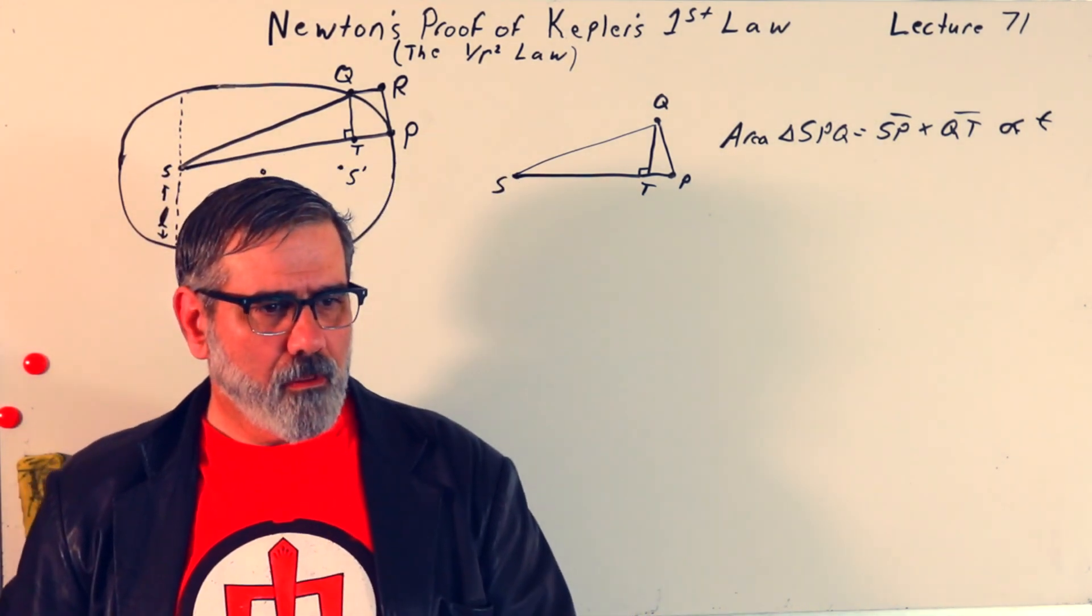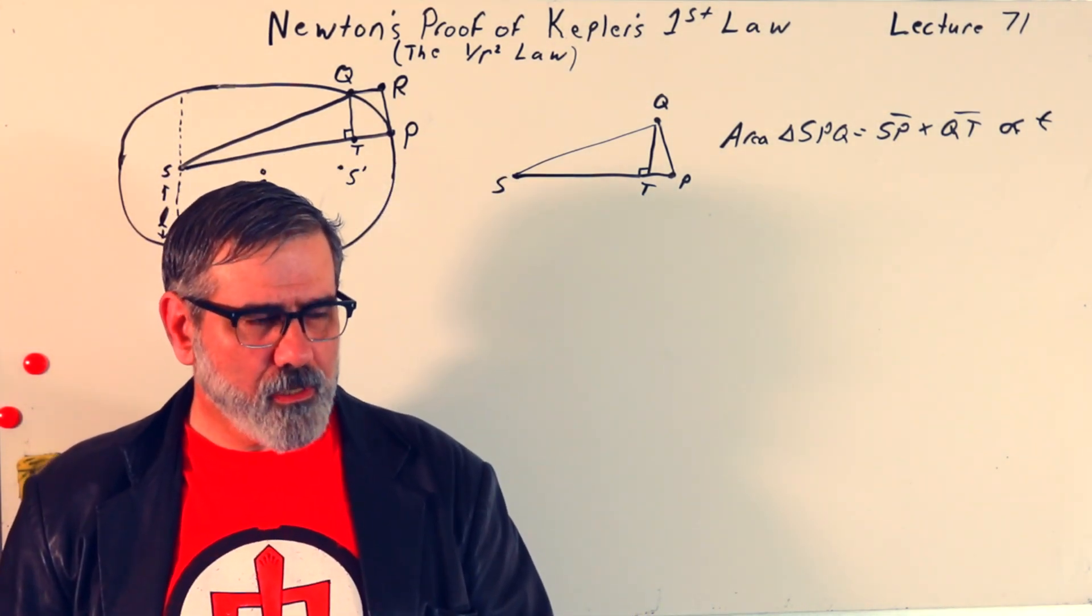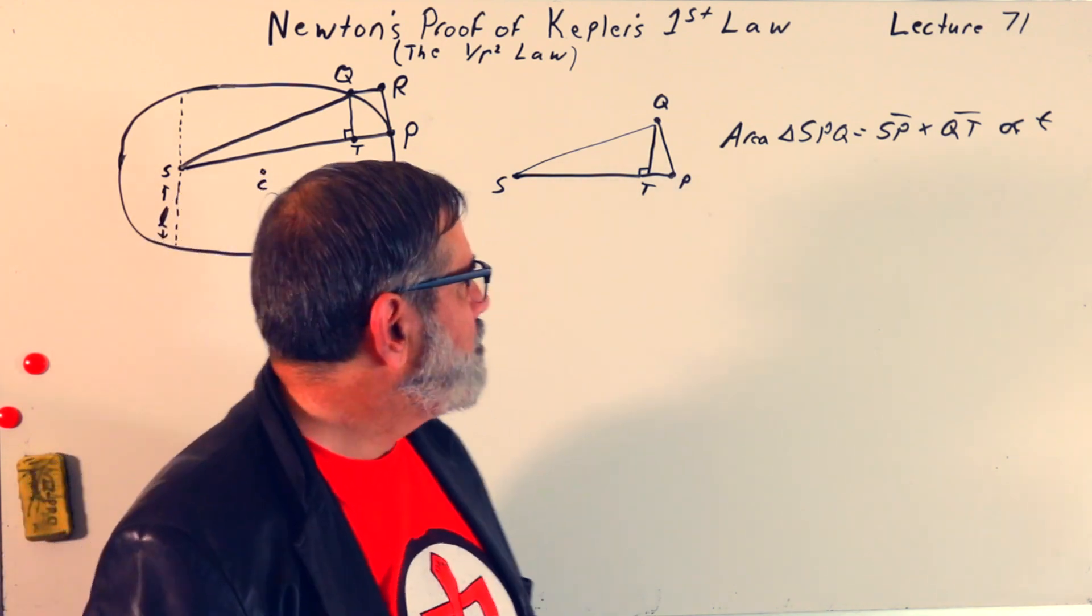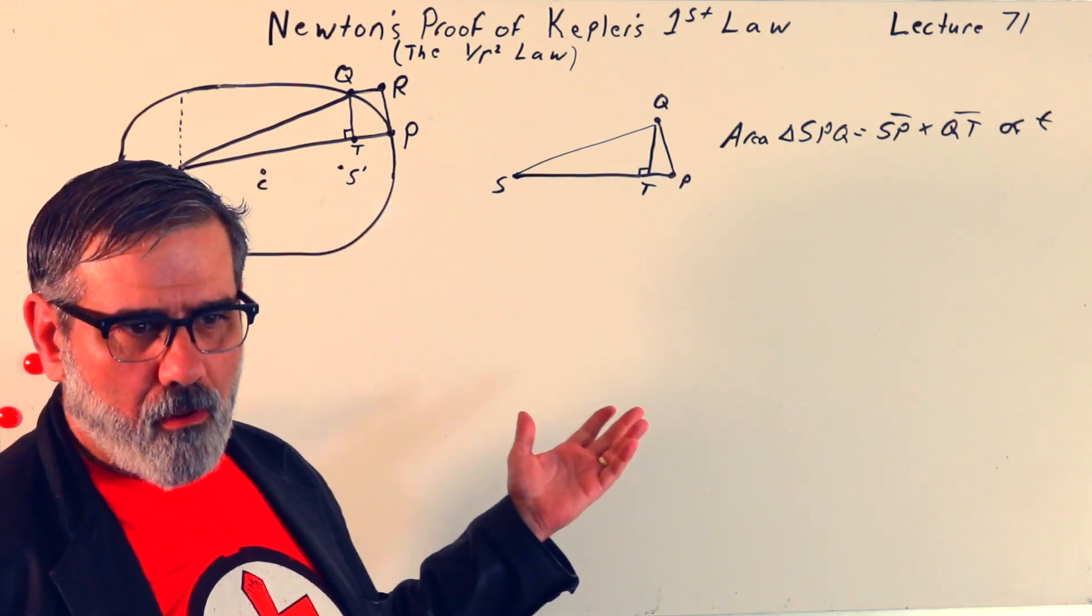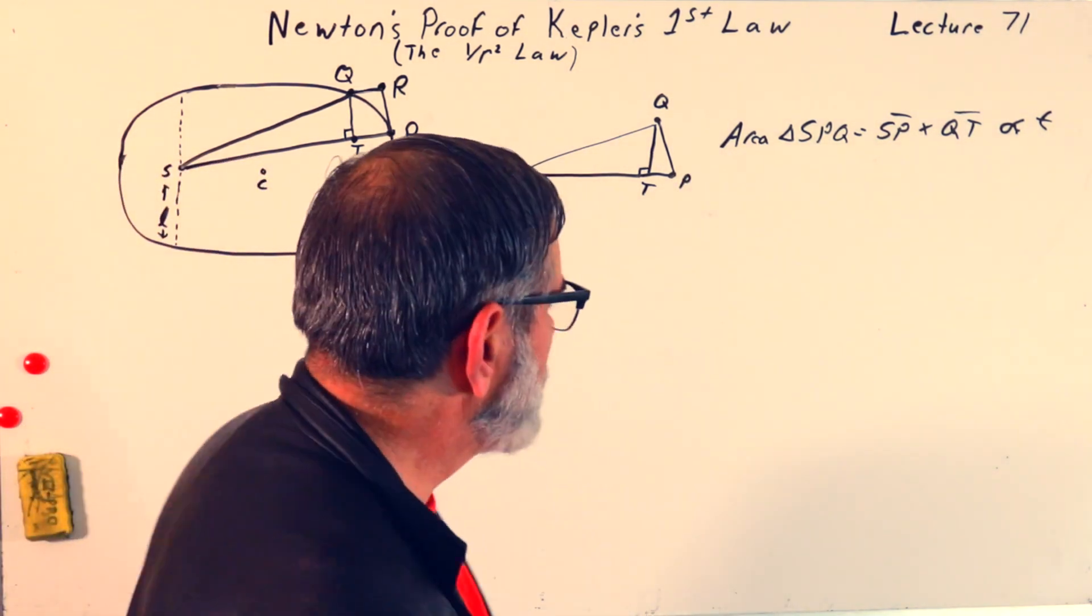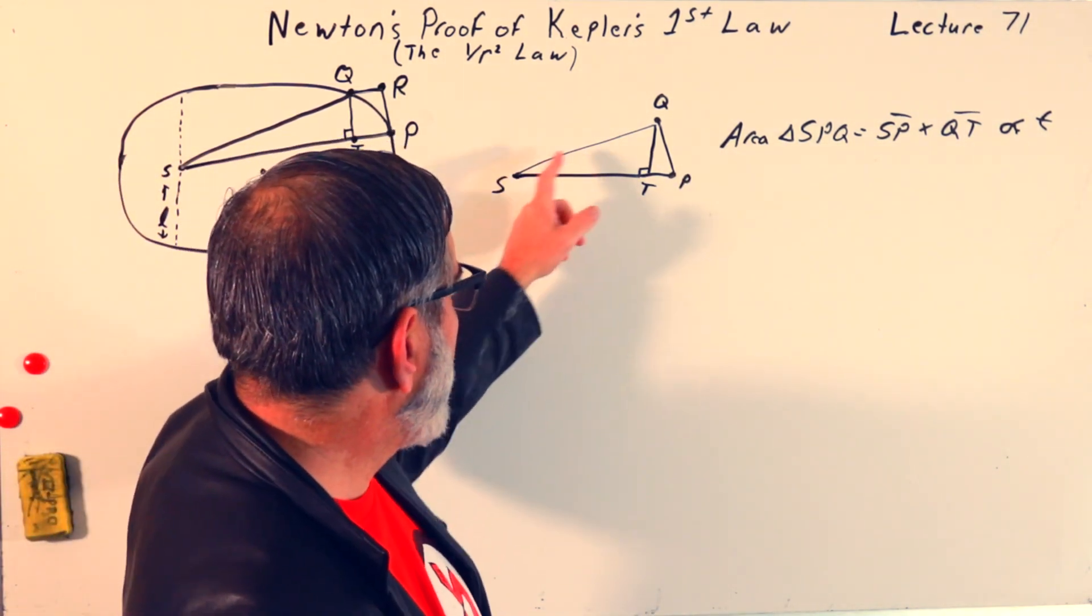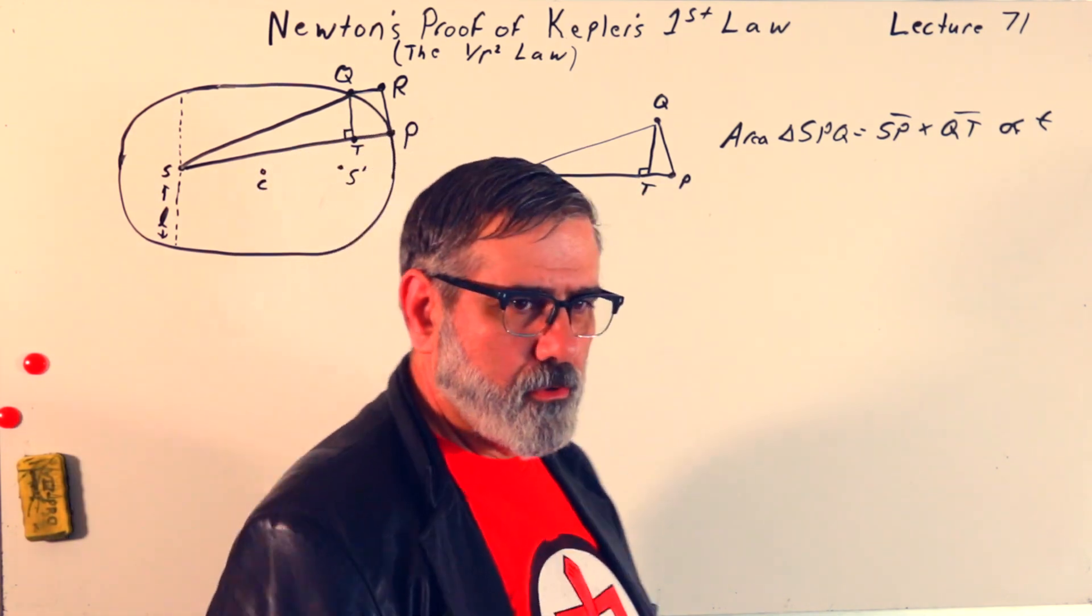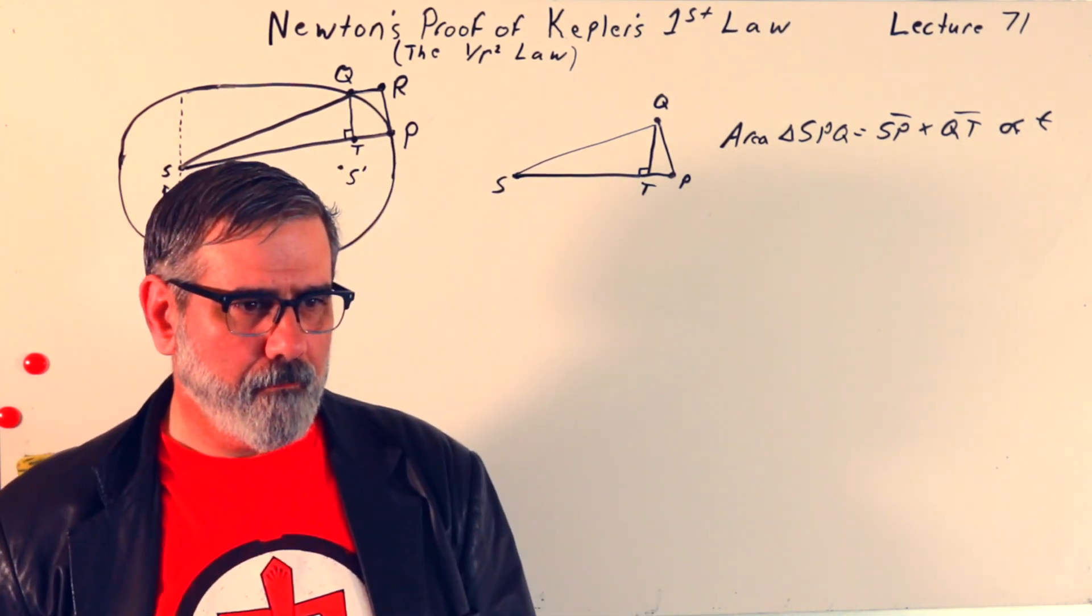And in theorem 1, he showed that this is proportional to the time. And if you want to get more details on that, you can go back to, I think it's lecture 69, but maybe it's 68. Also, it's Newton's second law. It's the equal areas and equal times law. So you can cite Kepler on that if you'd like. So, that's going to be the result. The area of this triangle, S, P, Q, is going to be equal to, or proportional to the time.